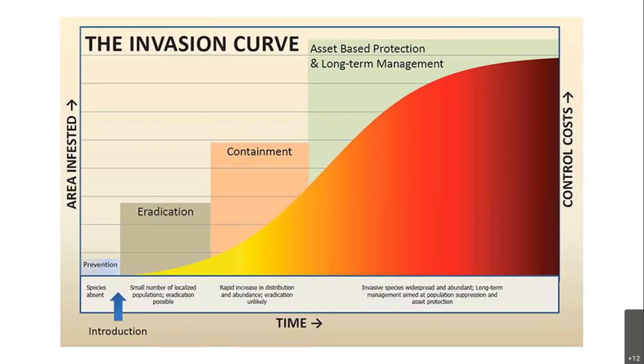Eventually an invasive species will build its population to a point where you can't eradicate it anymore, and at that point the strategy would be containment — you want to contain the infestation so it doesn't spread to uninfested areas. The main idea is that the earlier we are on this invasion curve, the better off we are, so we really want to focus our efforts as early on the curve as we can.